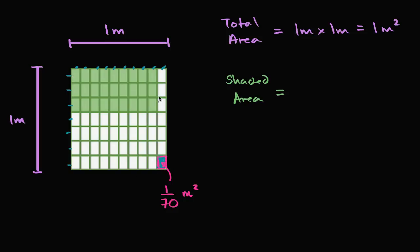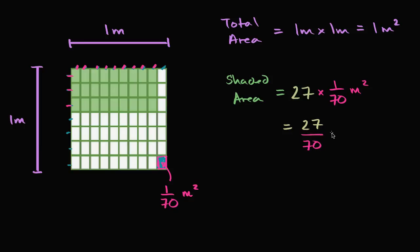Now if we cared about the shaded area, we could just count how many of these rectangles there are. We see that there are nine columns of three, so there are 27 of these equal rectangles in the shaded area. So the shaded area is going to be 27 of these rectangles, and each of them has an area of 1/70th of a square meter. 27 times 1/70th is going to be 27/70ths — 27/70ths of a square meter. And we're done.